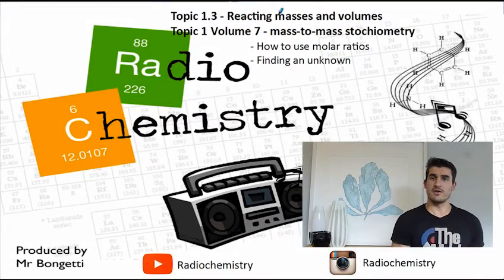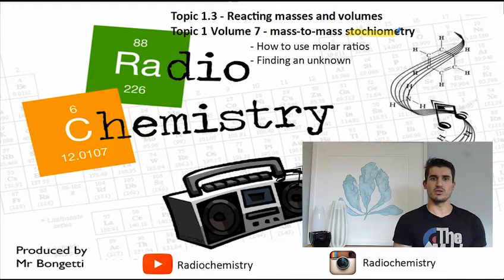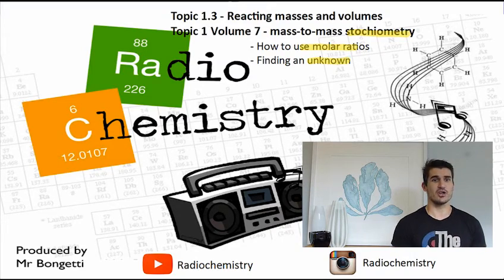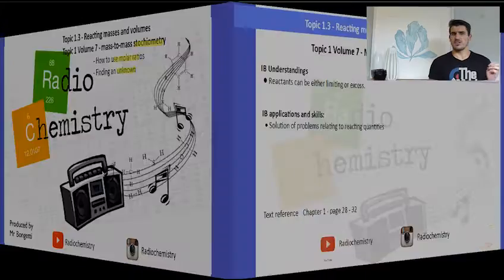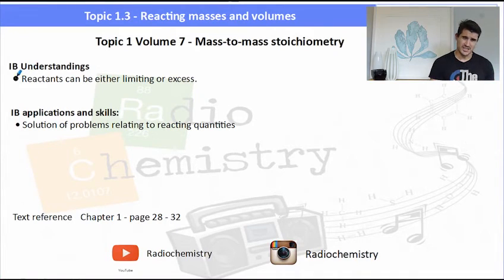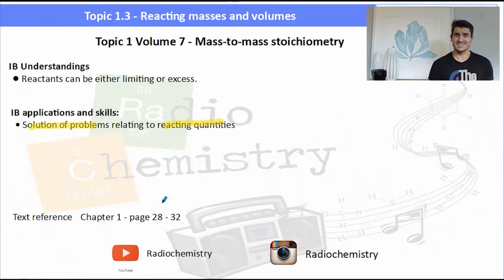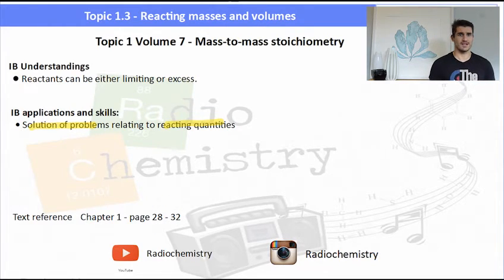Topic 1 Volume 7 Maths to Maths Stoichiometry. In this episode we look at how to use the molar ratios and we need to know how to find the amount of an unknown. The main thing is we need to be able to solve problems relating to masses in terms of stoichiometry.